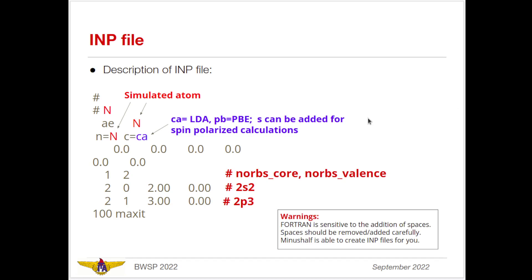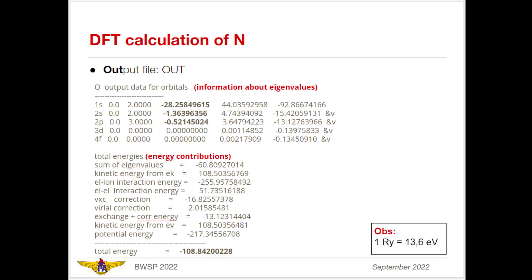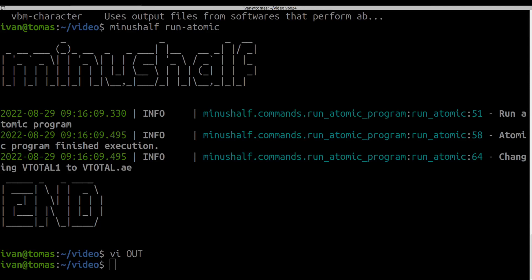Looking at the anatomy of the input file: you can add comments with a hashtag, the simulated atom is specified by its symbol, and you specify the flavor of the DFT calculation — PBE for PBE calculations, CA for local density approximation. It is important that you can add 'S' if you're interested in performing spin-polarized calculations, which we are going to use since we want to calculate variations of total energy.